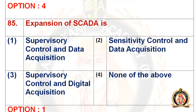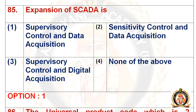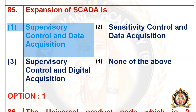Move on to the 85th question: the expansion of SCADA is dash. The first option is supervisory control and data acquisition, the second is sensitivity control and data acquisition, the third is supervisory control and digital acquisition, and the fourth is none of the above. The right answer is supervisory control and data acquisition.